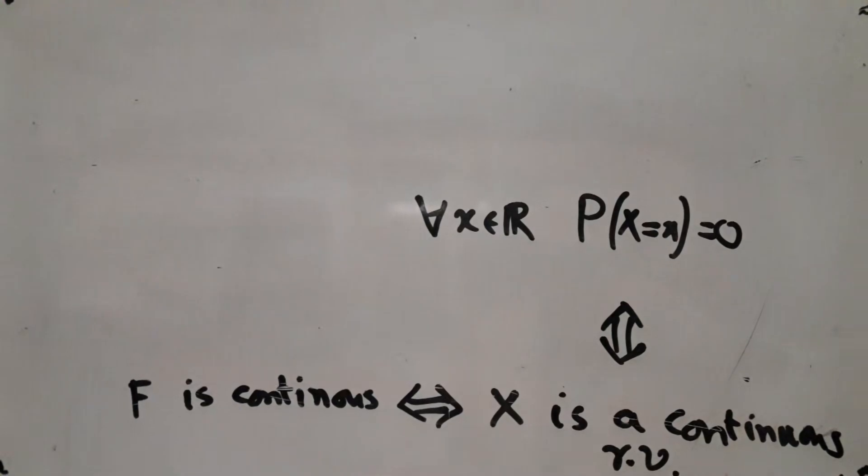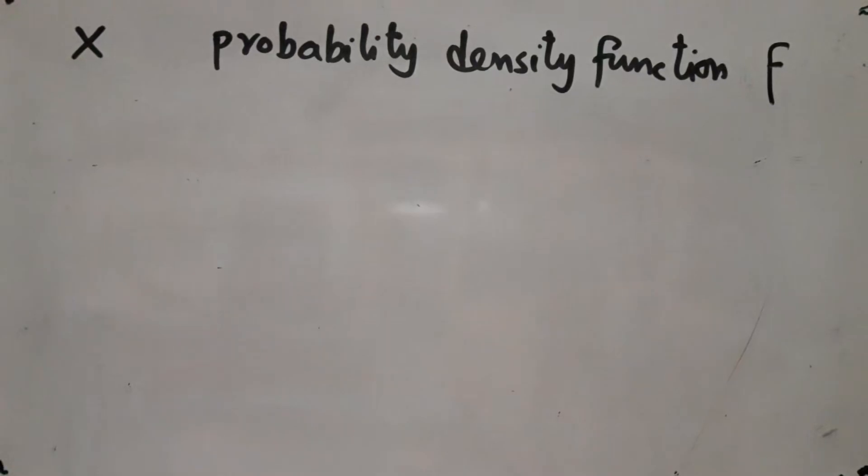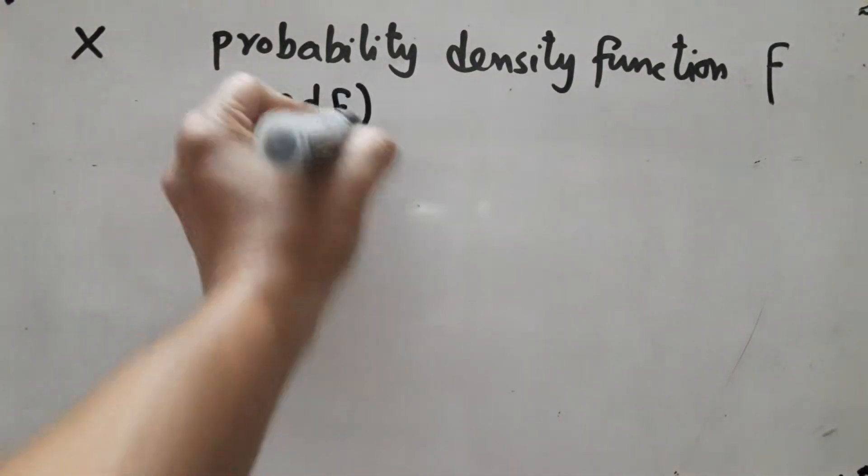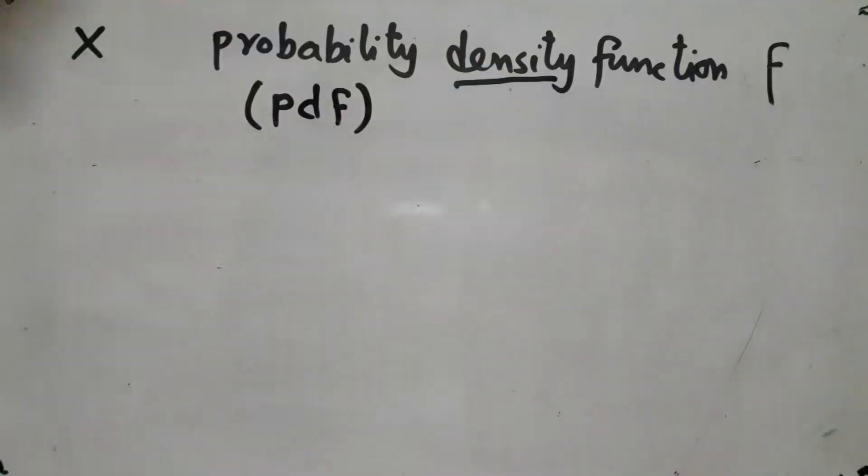Now we are going to learn about a special type of continuous random variable. A random variable X is said to have probability density function f, sometimes abbreviated to pdf or just the word density.